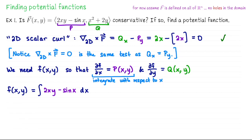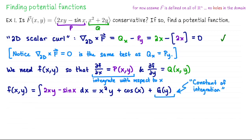We can think of that as returning back the function f(x, y) equal to some anti-derivative of 2xy minus sin x, integrated with respect to x, treating y like a constant. If I integrate that with respect to x, we get x squared y for the first term plus cosine x. Normally you'd add a plus c, but here we're working with two variables and only integrated with respect to one of them — so instead of plus c, I write plus g(y), where g(y) is my constant of integration.